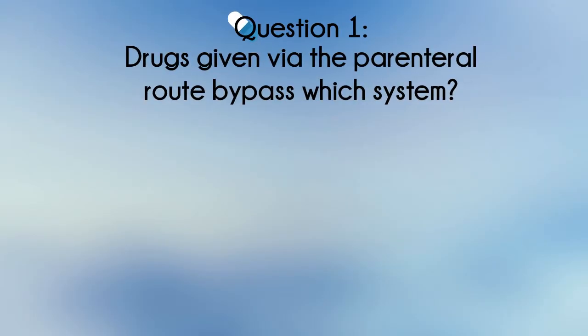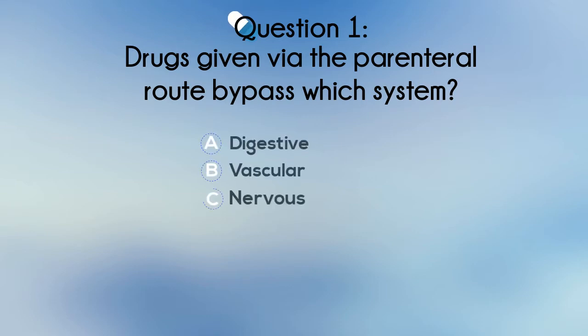Question 1. Drugs given via the perenoral route bypass which system? A. Digestive, B. Vascular, C. Nervous, or D. Integumentary.